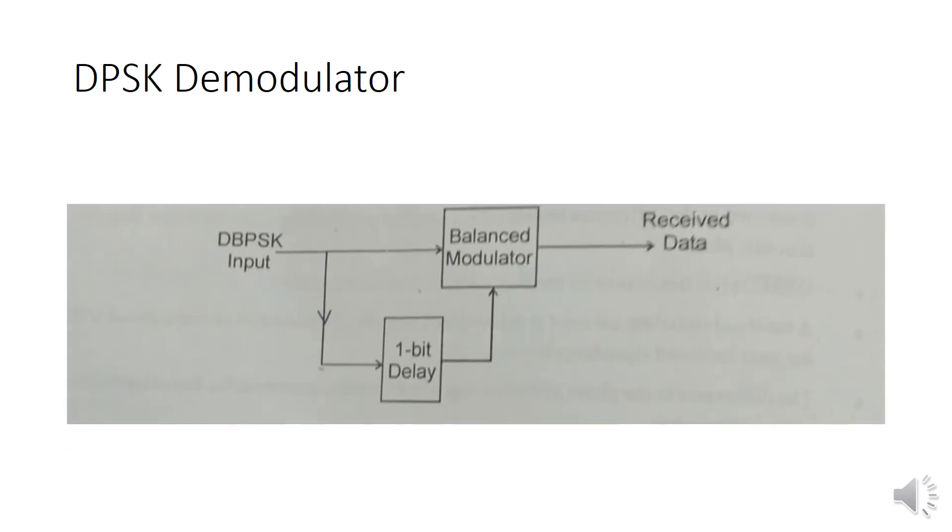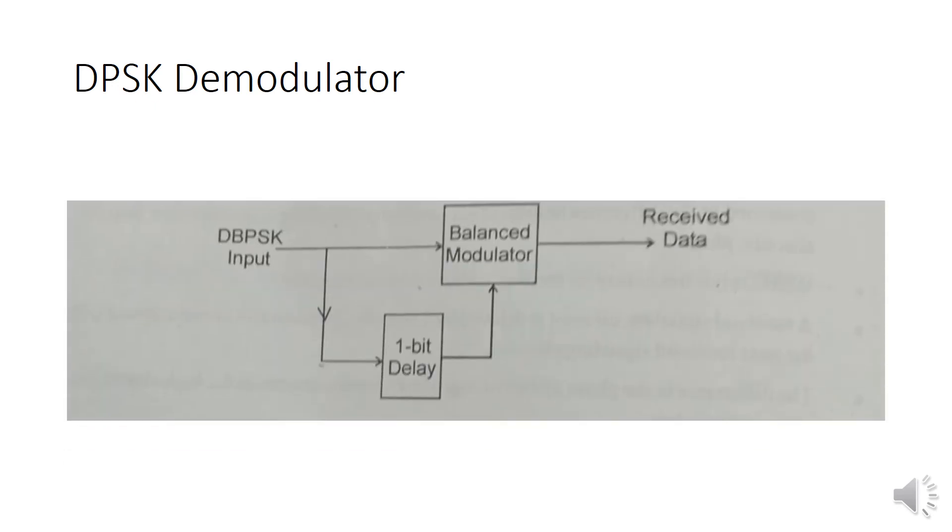Next we are going to see the DBPSK demodulator. This is the demodulator block. The DBPSK input is given to the balanced modulator and the 1-bit delay. This is connected to the balanced modulator. Finally, we will get the received data at the output.